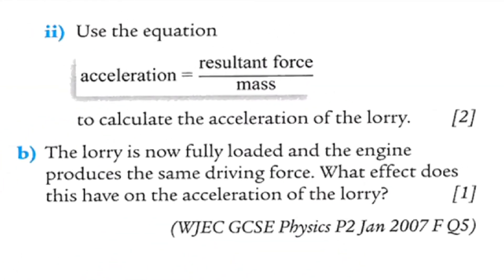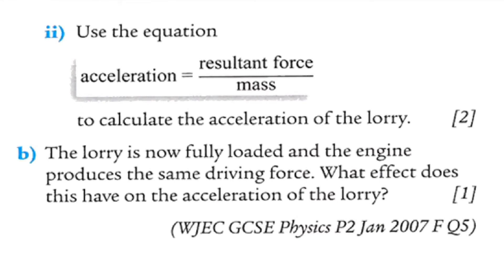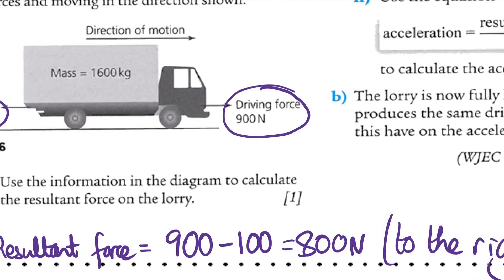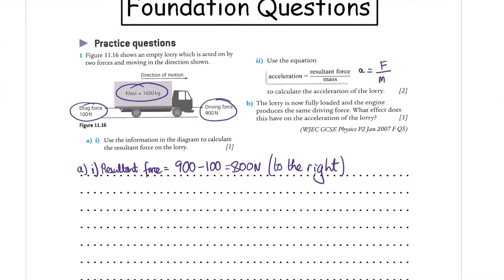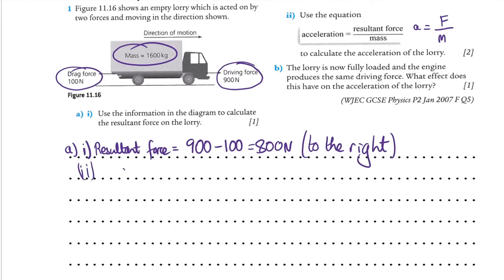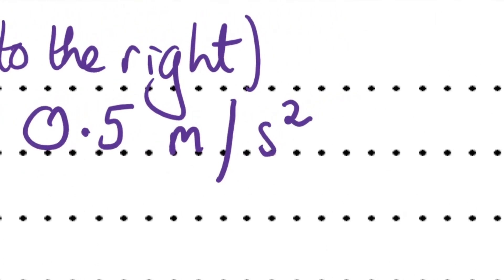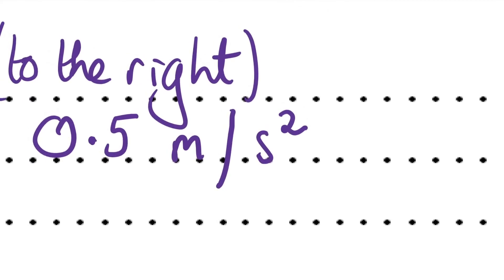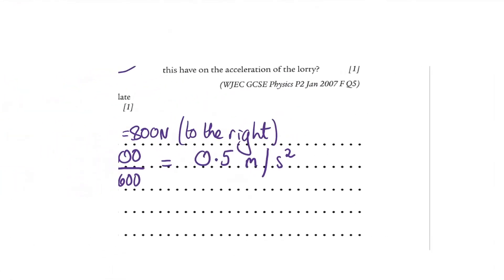And part two then is asking us to calculate the size of this acceleration. And they've given us the equation: acceleration is force divided by mass. We've worked out the resultant force, and we've given the mass here, 1600. So part two: remember, equation is equation number, answering, units. There's the equation. The numbers: force is 800, mass is 1600. And the acceleration is 0.5 because 8 over 16 is half. And I always remember, often people get these units wrong for acceleration: meters per second squared. That means every second the lorry is increasing its speed by 0.5 meters per second.